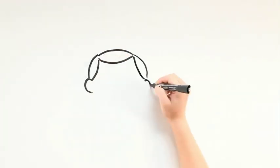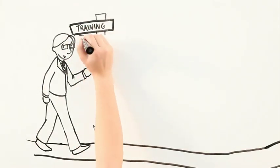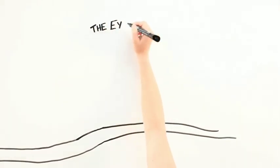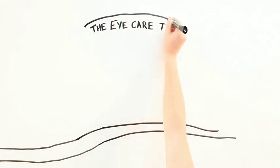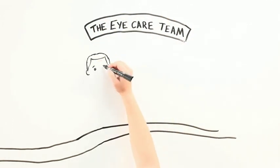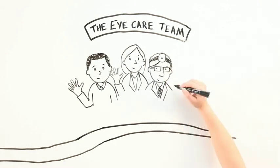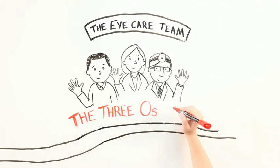Many people are not sure what an ophthalmologist is, so I wanted to walk you through the training and specialization needed to become one. To better understand what an ophthalmologist is, I wanted to introduce you to the three key players on the eye care team: the optician, the optometrist, and the ophthalmologist, or what I like to call the three O's of eyes.